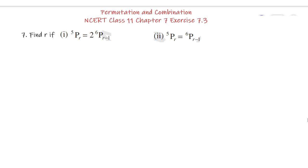Find R if: Part 1 — 5PR equals 2 into 6P(R minus 1). And Part 2 — 5PR equals 6P(R minus 1). We are going to solve Part 1 first. We have to find the value of R.